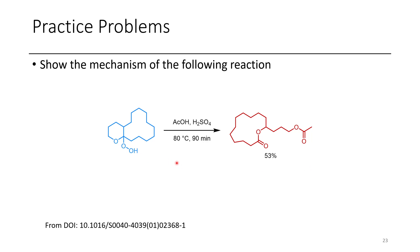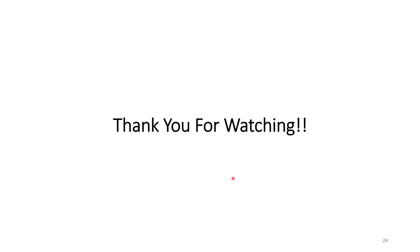The final practice problem: a hydroperoxide ether intermediate is treated with acetic acid and sulfuric acid to give the corresponding lactone — a type of macrolactonization. Figure out the mechanism. I hope this lecture has been useful. If you have any questions or comments, leave them below, and it would really help the channel if you left a like and subscribed. Have a great day!